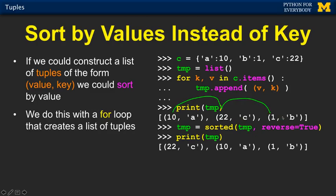So we're going to call sorted again and pass in temp — our little list we just made of two-tuples flipped to value-key. And we're going to give it an extra parameter to go backwards, so sort from high to low. Reverse equals true is what that does — you just add that as a parameter to sorted.